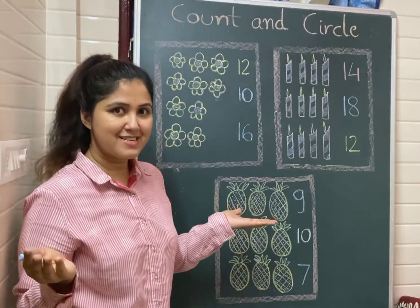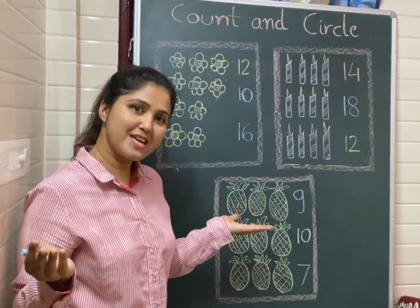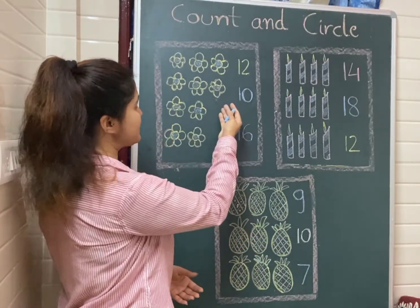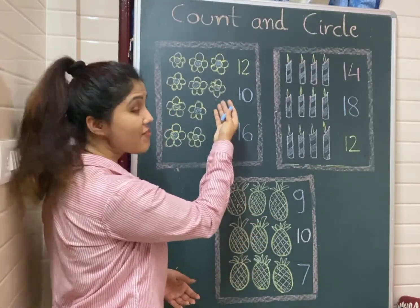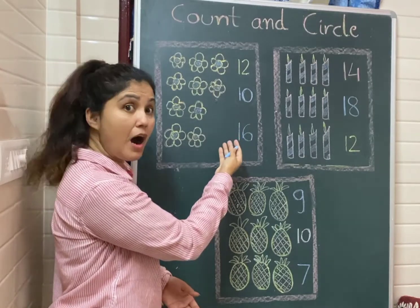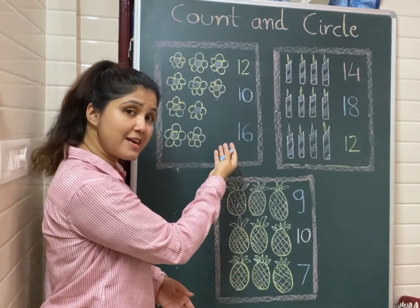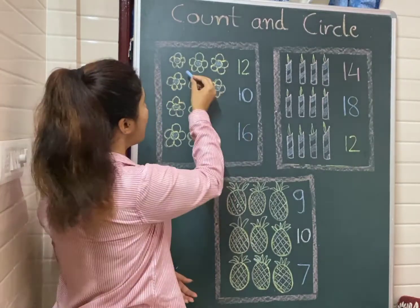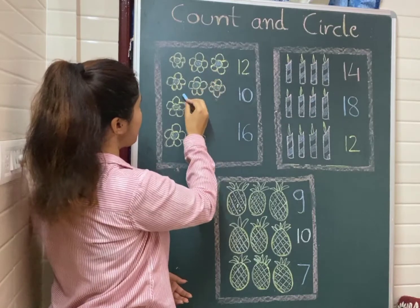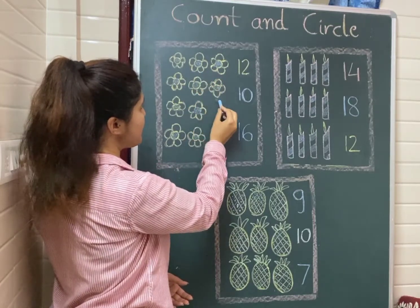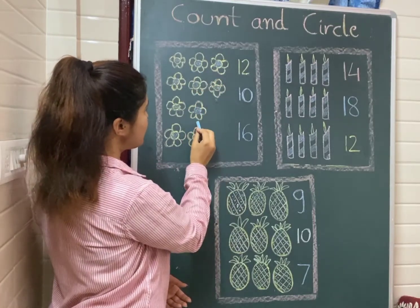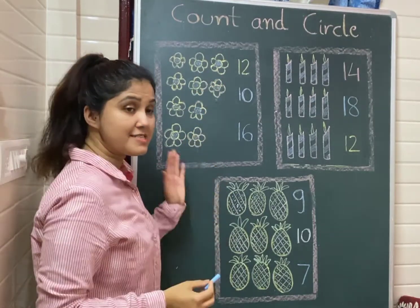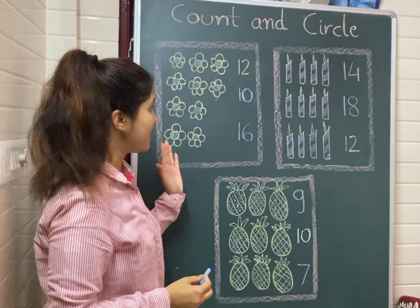So let's start counting. Now here you can see flowers. How many flowers are here? Let's count. 1, 2, 3, 4, 5, 6, 7, 8, 9, 10. 10 flowers are here.